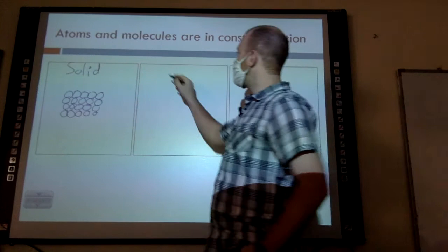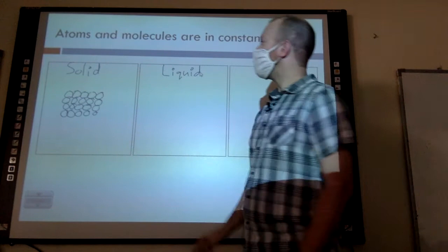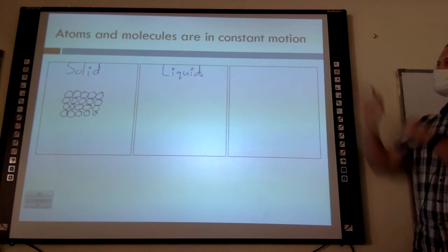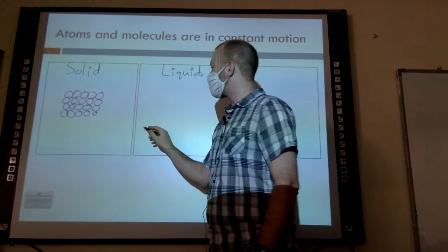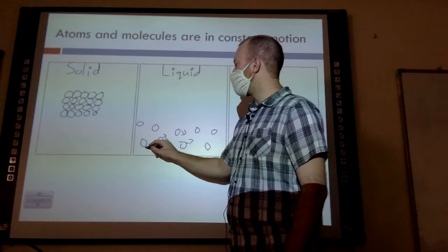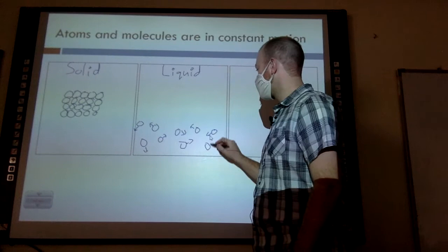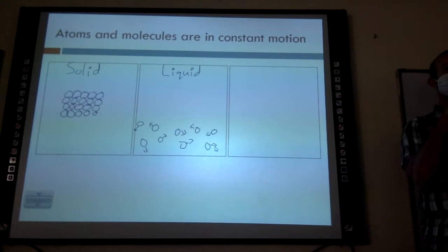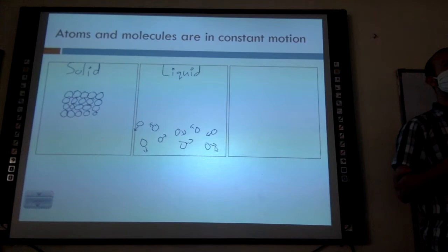If I were to then look at a liquid, how would this change? They're going to be a bit farther away. If I looked at a liquid, the particles are going to be a little more spaced out and they move around — that's called Brownian motion. They're somewhat still close together and still moving.